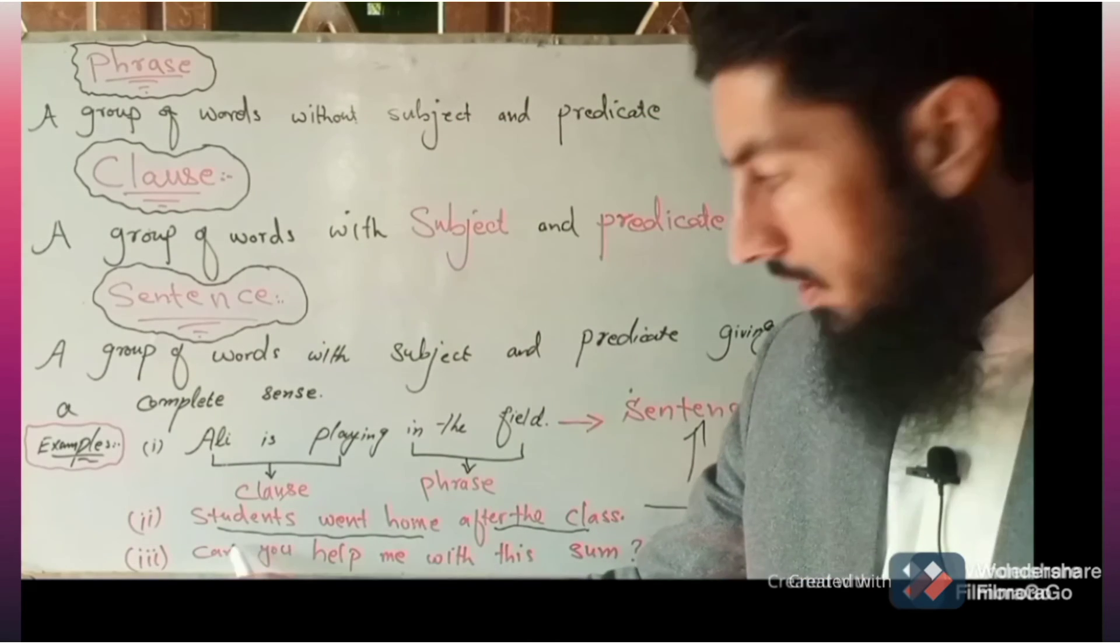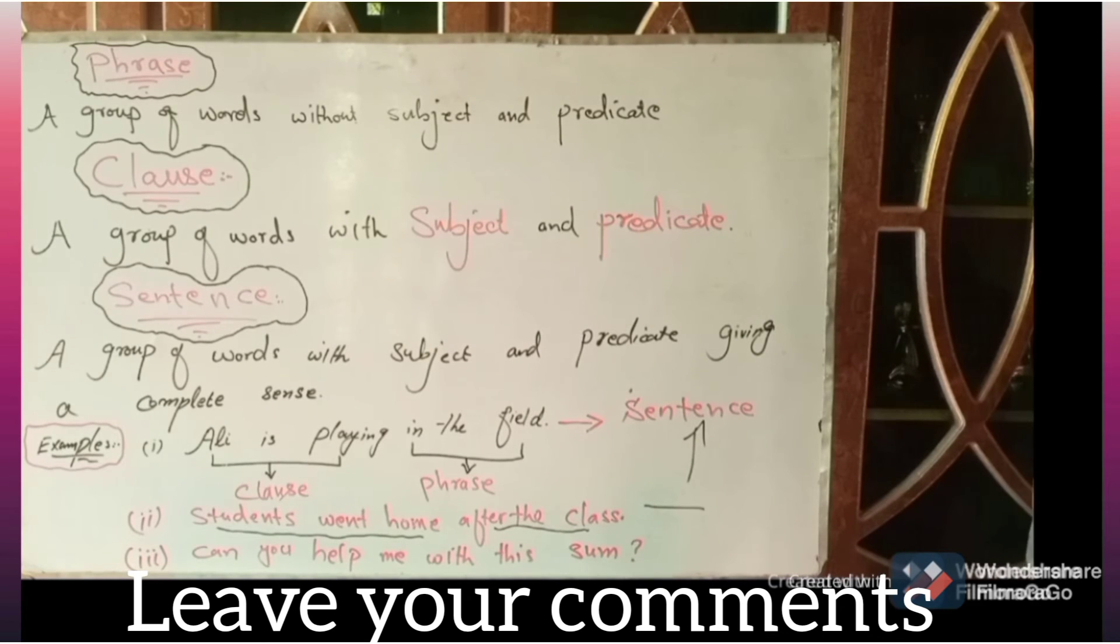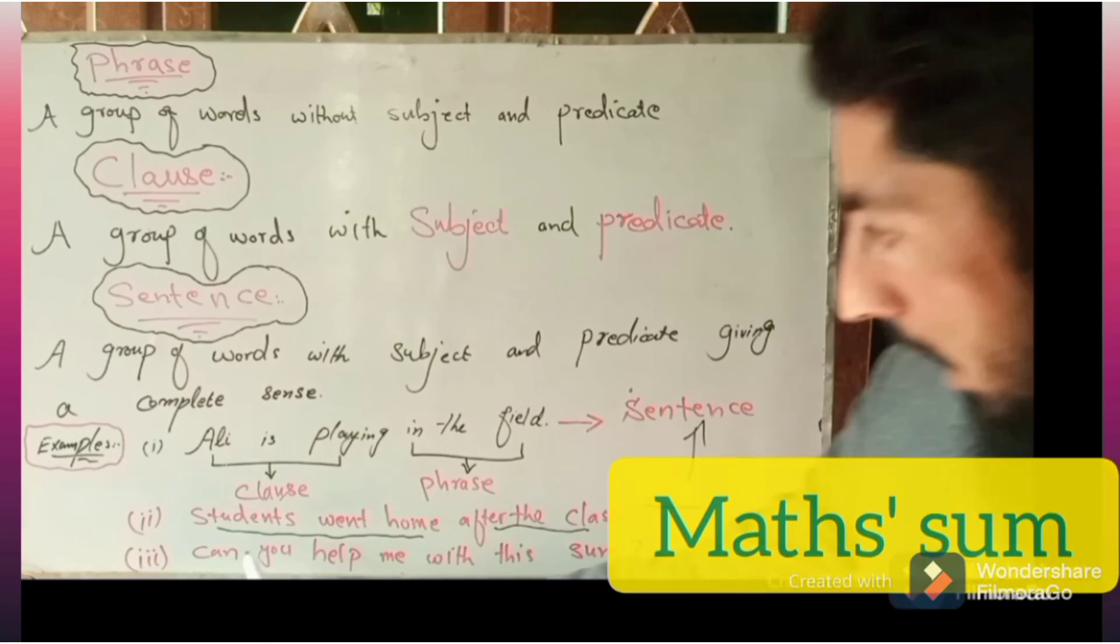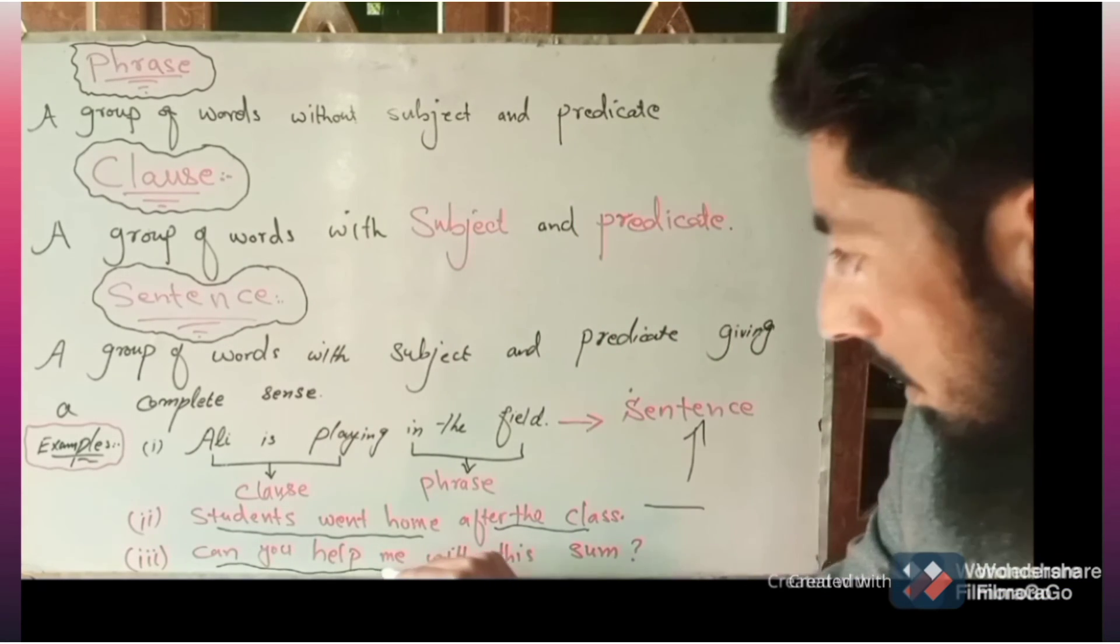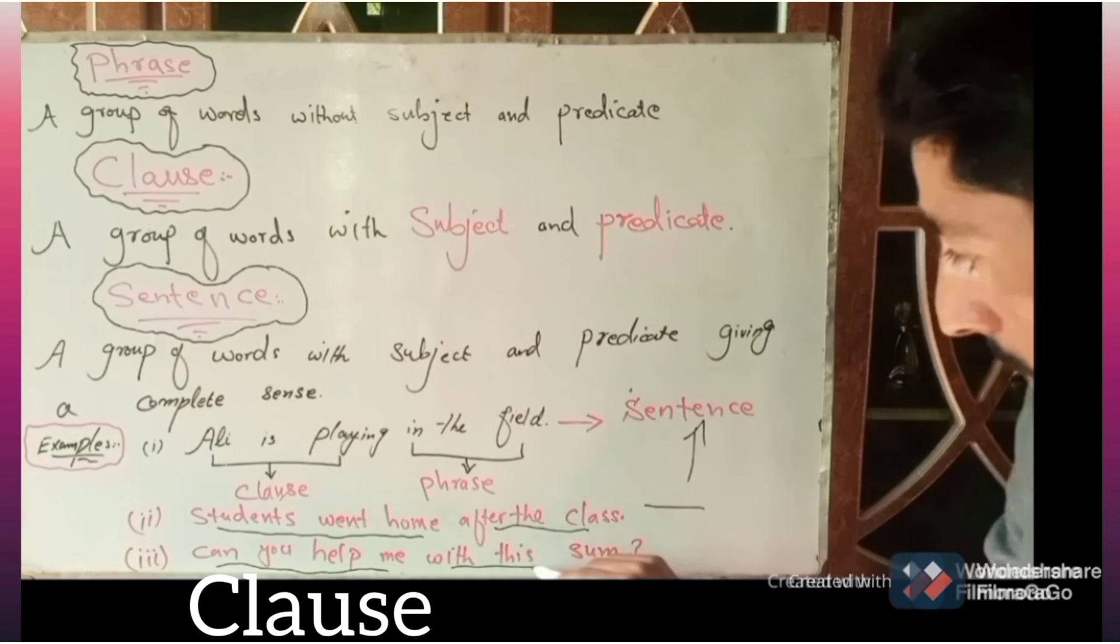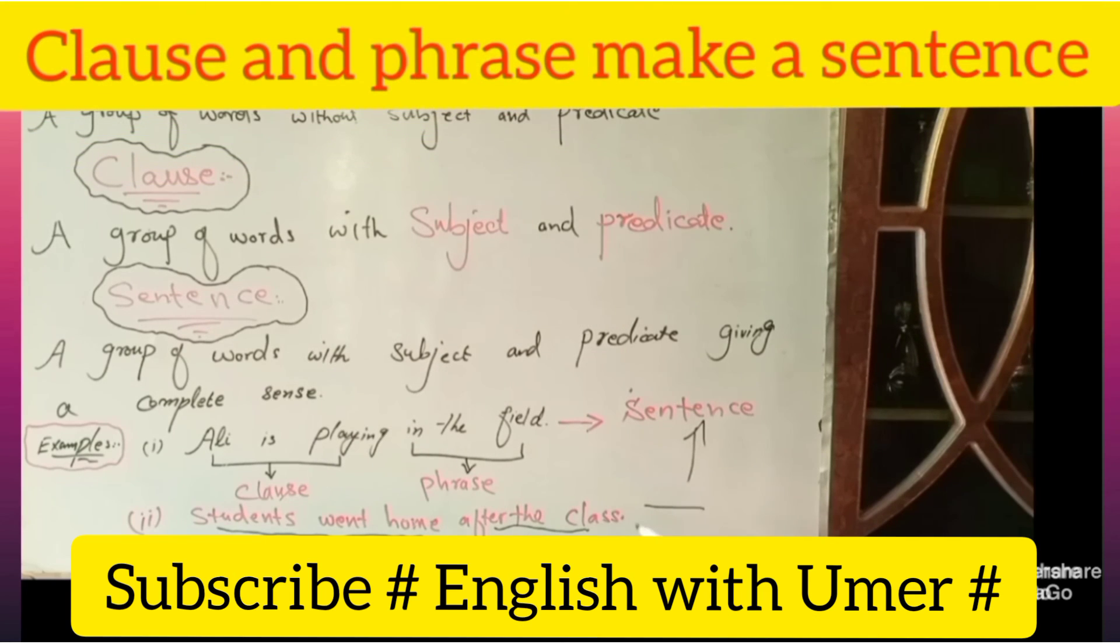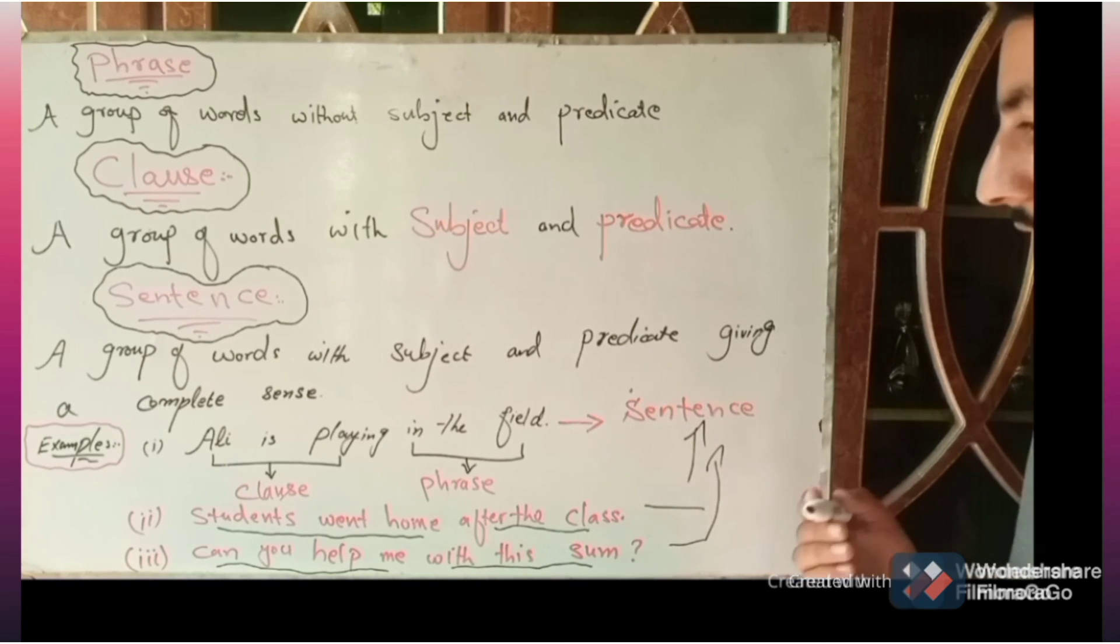Similarly, last example. Can you help me with this sum? Sum means a math question. Can you help me? Up till this, this is a clause. With this sum, this is a phrase. So clause and phrase, subject and predicate, it makes both these things make us a sentence, and this is a sentence.